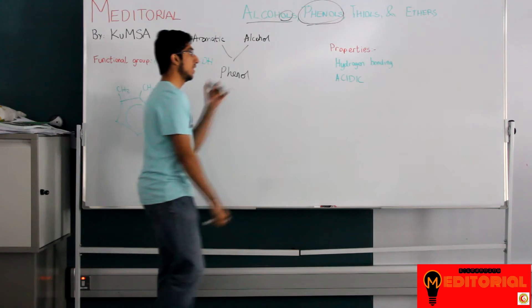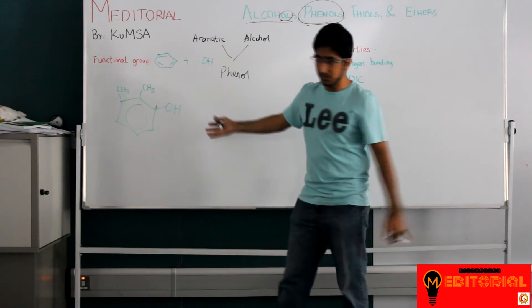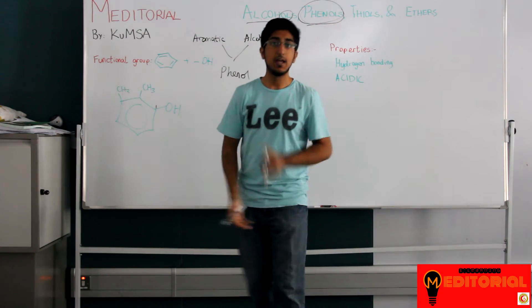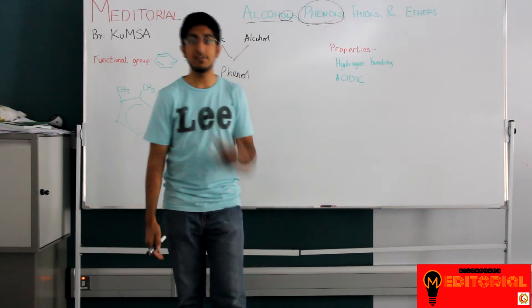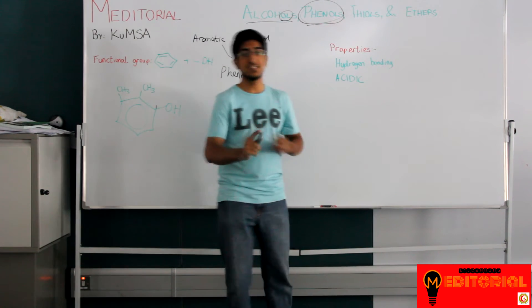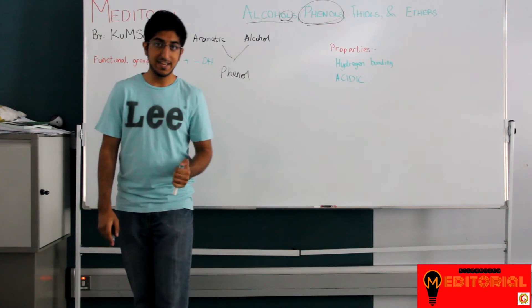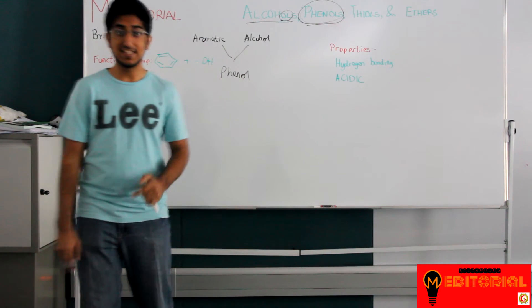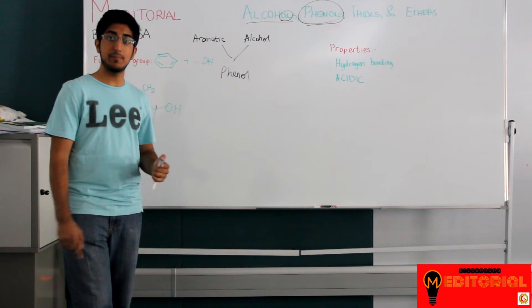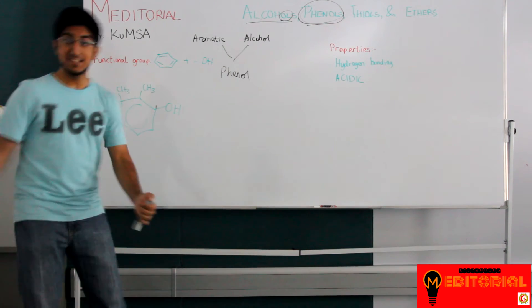What I do want to talk to you about is its properties. It can undergo hydrogen bonding because it has an OH group, therefore it can accept hydrogen bonds and it can give hydrogen bonds. But the more interesting part is that it's acidic. This is what makes it different from an alcohol. Alcohols are not acidic, but a phenol is acidic, therefore it will react with the base giving you products. That's it for phenols.